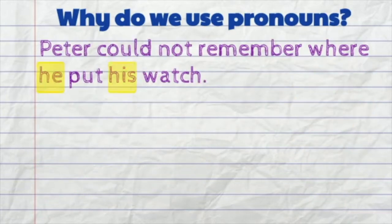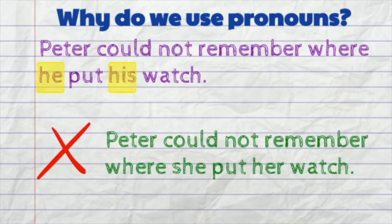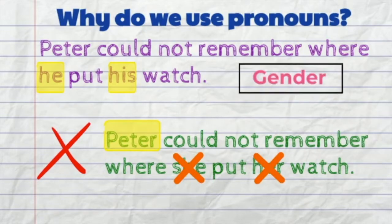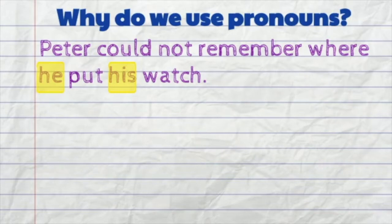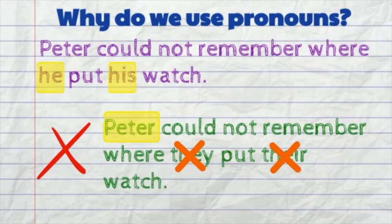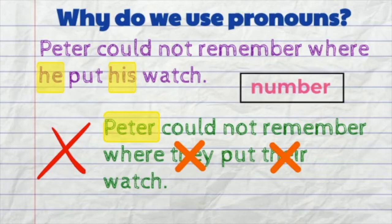Here we use 'he' and 'his' in the sentence. It would be wrong to say: Peter could not remember where she put her watch. Peter is a boy — we don't use 'she' or 'her.' So when we use pronouns, we need to pay attention to the gender of the subject. Gender means male or female. It would also be wrong to say: Peter could not remember where they put their watch. Peter is a singular noun, so we don't use 'they' or 'their.' When we use pronouns, we also need to pay attention to the number of the subject — is it one person or more than one person?